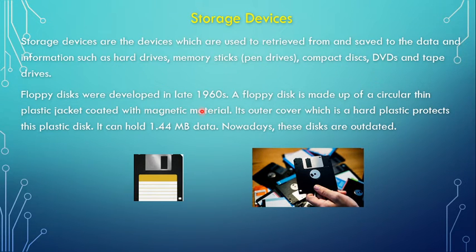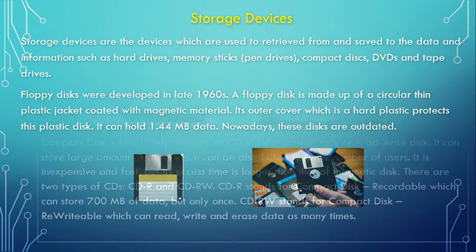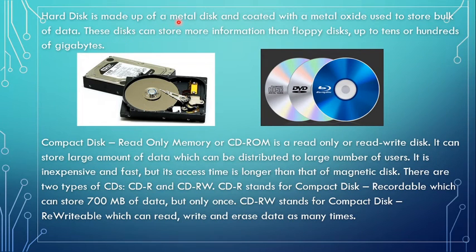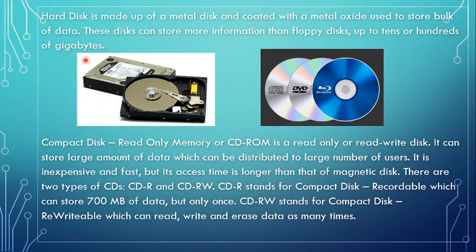Types of storage devices: First, floppy disk — an old-fashioned device not used today, famous in the 1960s with a storage capacity of 1.44 MB, using magnetic metal for storage. Next, hard drive — made of metal disks coated with metal oxide used to store bulk data. A hard drive can store up to 10 or 100 gigabytes, so its storage capacity is very high.